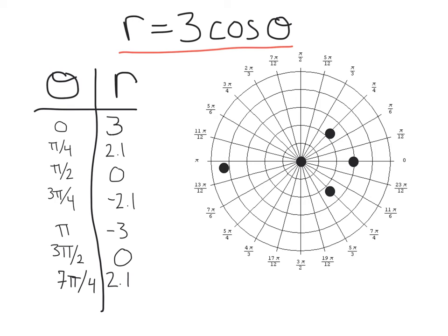We've got (π, negative 3) — that's pi here, negative 3. Looks like we already have a point there. We've got (3π/2, 0) — that's 3π/2 right here, 0. Again, we have a point there. Then (7π/4, 2.1) — we've already got a point there as well. Now, if you weren't sure what this graph would look like, you could always pick more radian values. But with experience I know this is actually going to be a circle. Only 4 distinct points with some overlap, but I can deduce this is going to be a circle.